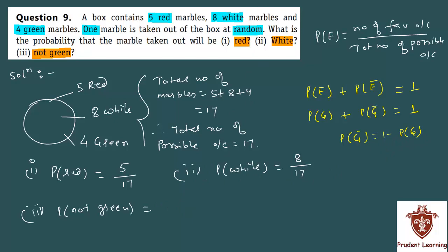1 minus probability of green. Now just put the values. 1 minus - what will be the probability of green? Total number of favorable outcomes, how many green marbles are there, which is 4 upon total number of possible outcomes still remaining same, which is 17. This becomes 17 minus 4 upon 17, which is equal to 13 upon 17. So the probability of not getting a green marble will be 13 upon 17.